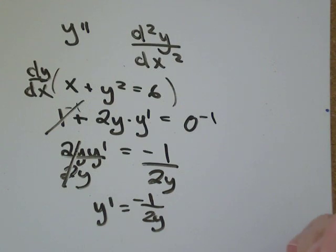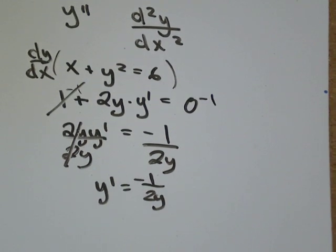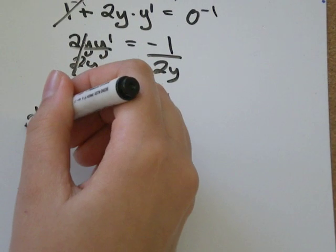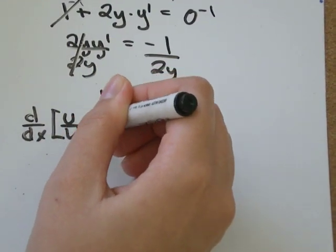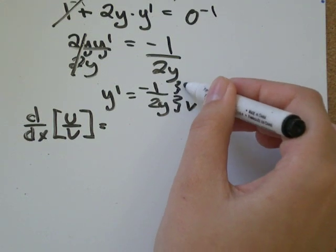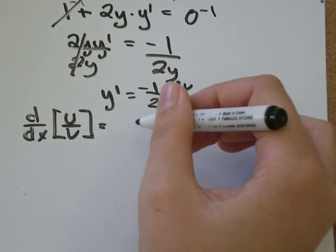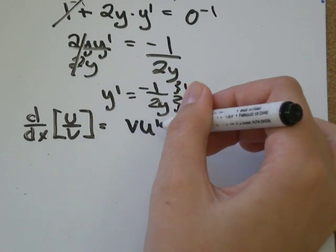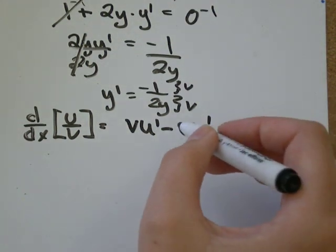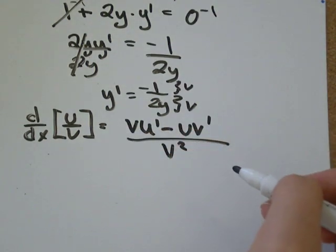So then what we do is we take the derivative of y prime. So to do that, we're going to need to use the quotient rule for derivatives, which says that the derivative of something that's a fraction equals, that's v, that's u. So it's the thing on the bottom, times the derivative of the thing on the top, minus whatever's on the top, times the derivative of the thing on the bottom, divided by the thing on the bottom squared.